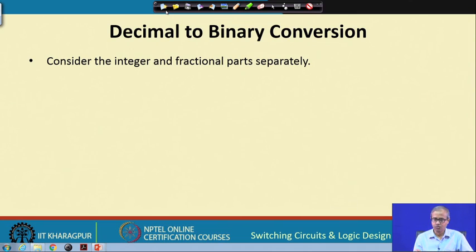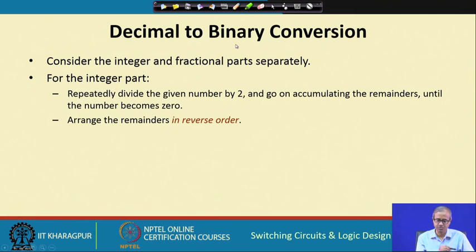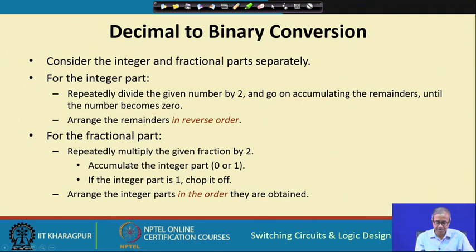When converting from decimal to binary, the integer and fractional parts must be handled separately. For the integer part, repeatedly divide the number by 2, accumulate the remainders, and read them in reverse order — that gives the binary equivalent. For the fractional part, repeatedly multiply by 2, take out the integer part after each multiplication, and read those integer parts in the forward order — that is your binary equivalent.